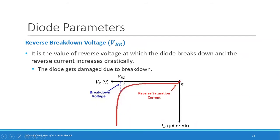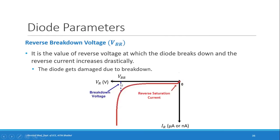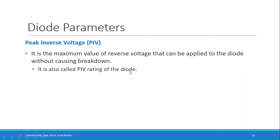Next is breakdown voltage or reverse breakdown voltage. If you increase the reverse voltage beyond this value, the diode breaks down — the reverse current starts increasing drastically and the diode gets damaged and cannot be recovered. The peak inverse voltage (PIV) is the maximum reverse voltage that can be applied without causing breakdown — just less than the breakdown voltage. It is also called PIV rating.